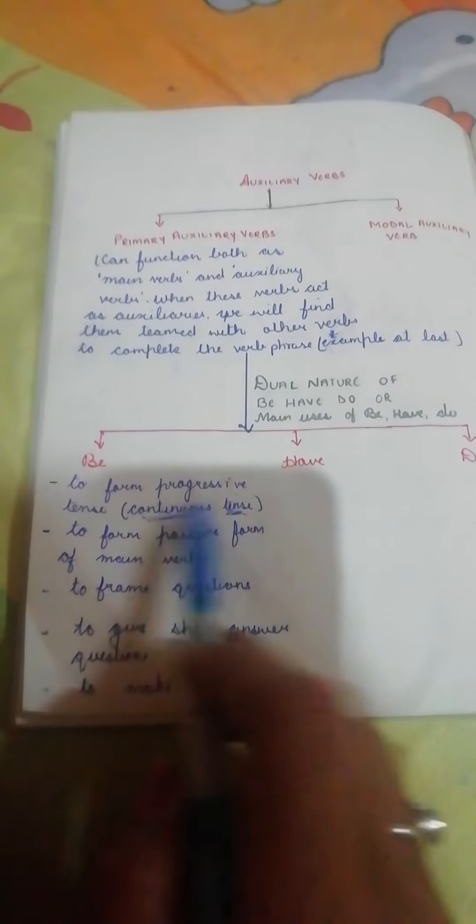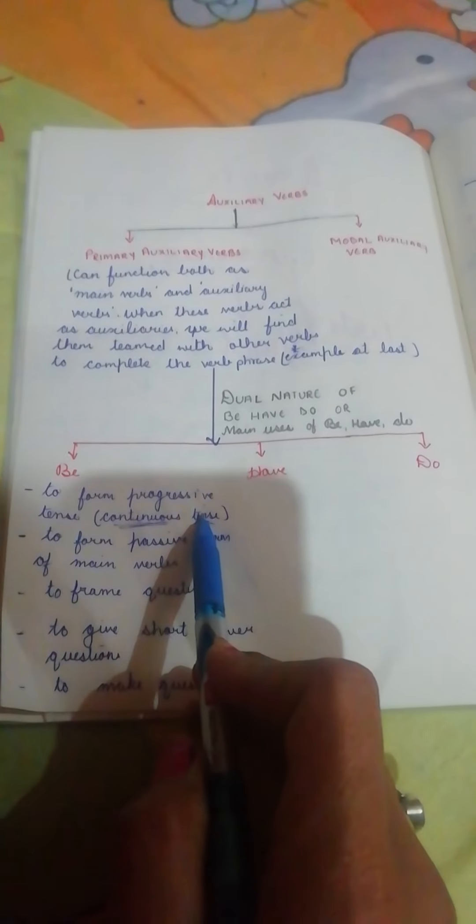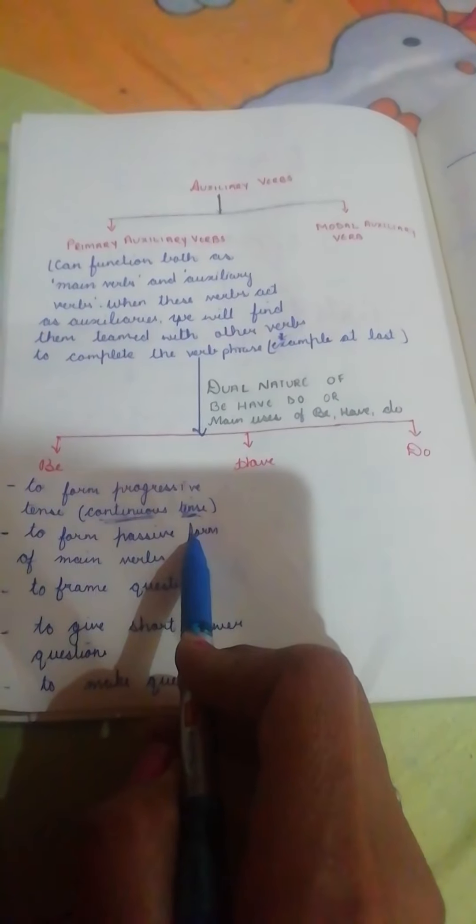The second use of the BE family is to form the passive form. For example: 'Rome was not built in a day.' Here 'was...built' is the passive form, and 'was' comes from the BE family.